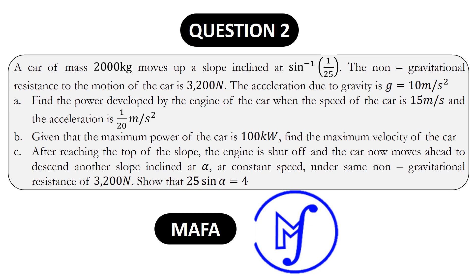Let's get started. The question reads: a car of mass 2000 kilograms moves up a slope inclined at sine inverse of 1/25. The non-gravitational resistance to the motion of the car is 3200 Newtons. The acceleration due to gravity is g = 10 m/s². Part (a): find the power developed by the engine of the car when the speed of the car is 15 m/s and the acceleration is 1/20 m/s². Part (b): given that the maximum power of the car is 100 kilowatts, find the maximum velocity of the car.